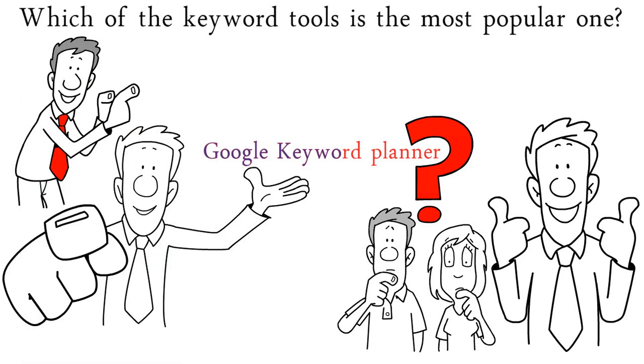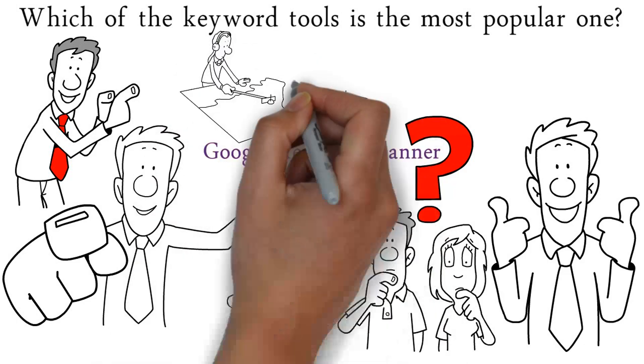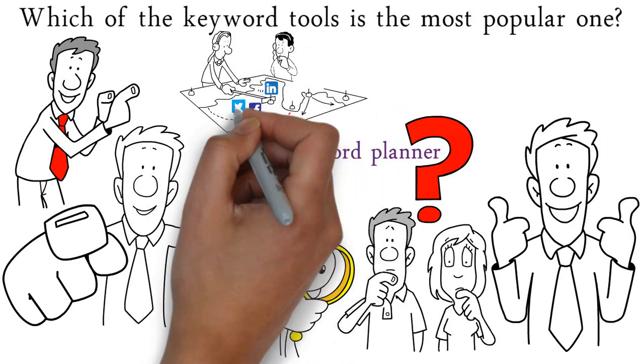So, what is Google Keyword Planner? It's a tool to find or generate new keyword ideas for any product, service, or even a website or a landing page.